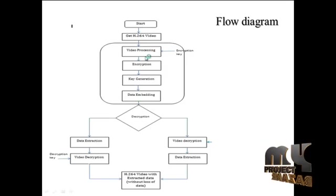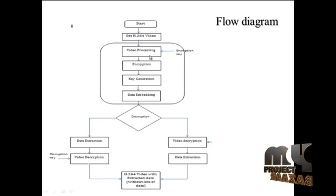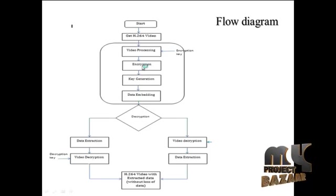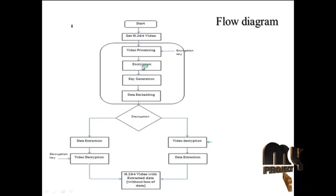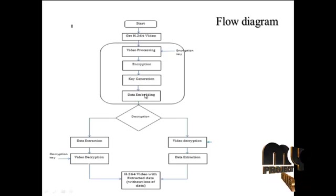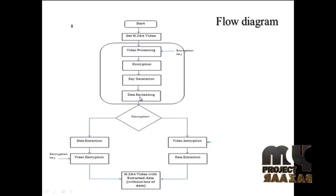In the video processing unit, an encryption key is generated. After the encryption key is generated, the video is sent to the encryption module. In this encryption module, the video file is encrypted. After encryption, the decryption key is generated and sent to the data embedding process, where secret data is embedded with the encrypted video.